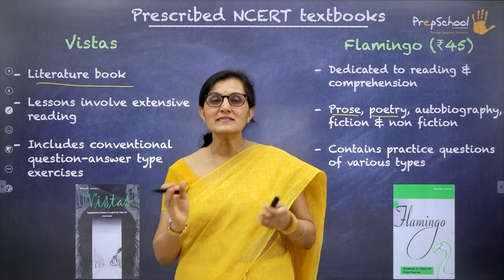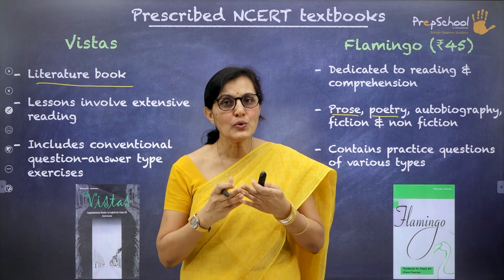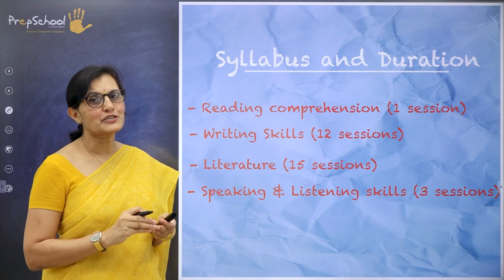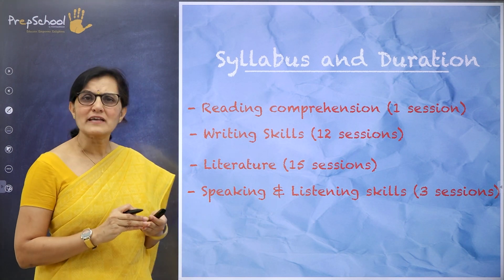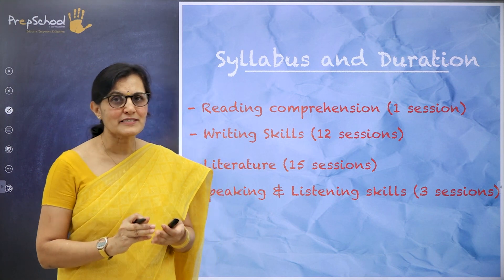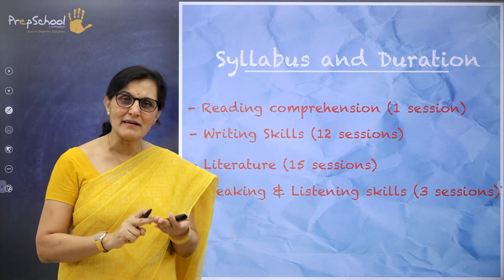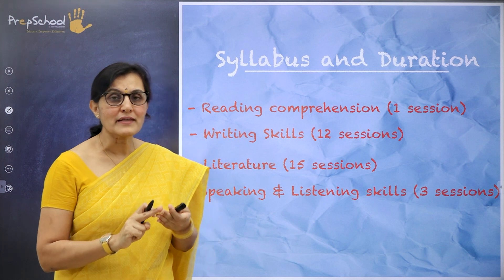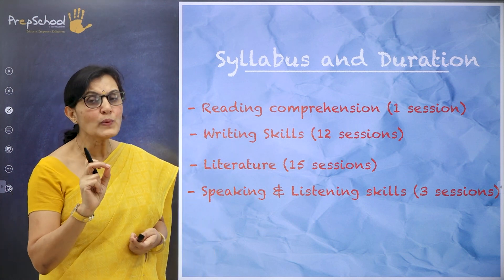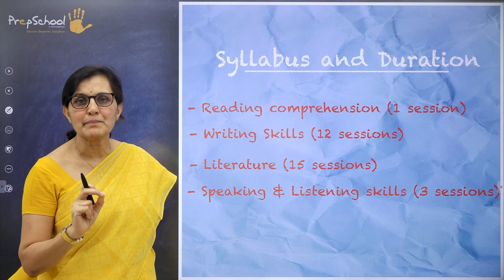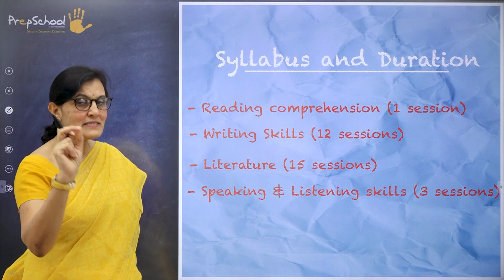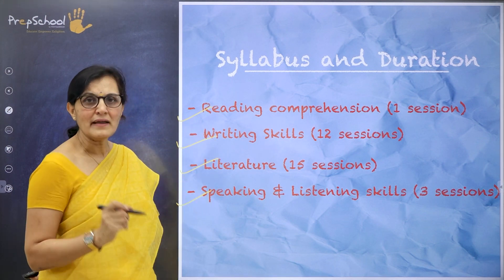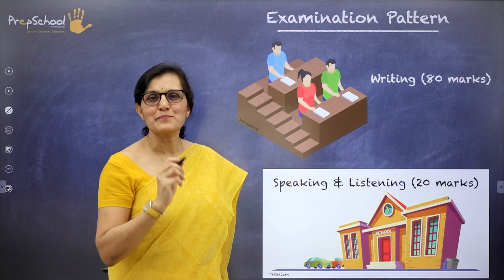Vistas and Flamingo are the two textbooks for your 12th grade. Going to the specifics of what portion you need to cover: broadly it is categorized into reading comprehension, literature, writing skills, and speaking and listening. Remember, all these are of equal weightage and equally important — you cannot be skipping any. Understand your syllabus: reading comprehension, writing skill, literature, speaking and listening.